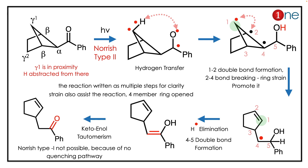The radical has to quench, and the ring will open due to strain — the strain assists the ring-opening reaction. You have a 5-membered ring with a radical in the fourth position, then hydrogen elimination leads to the enal form.